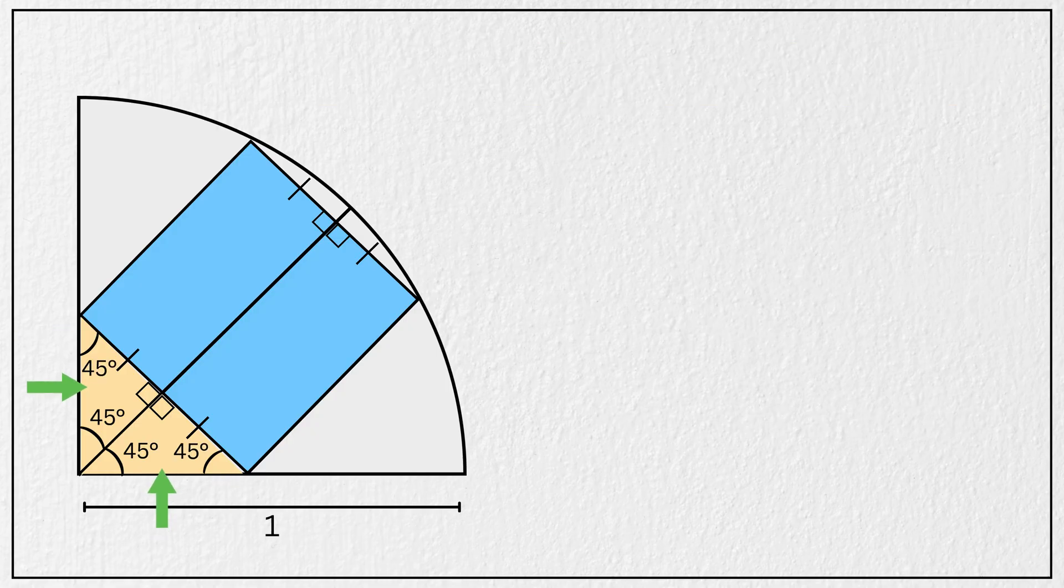And these triangles are isosceles right triangles. In other words, their two legs are equal in length. So this side is equal to this side.